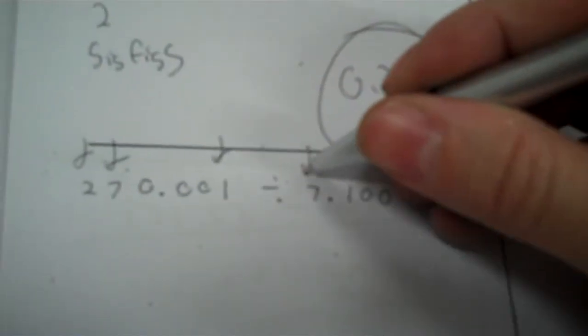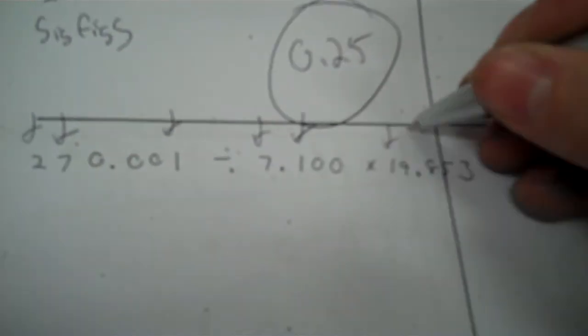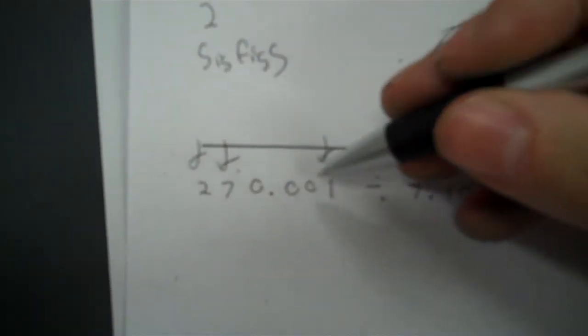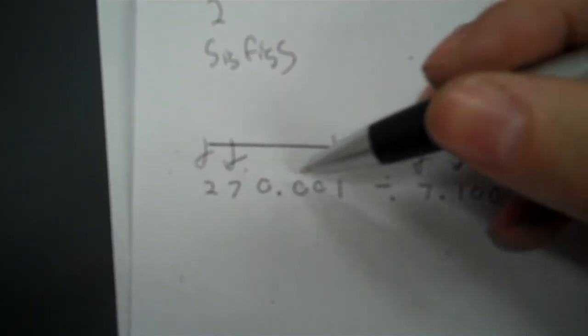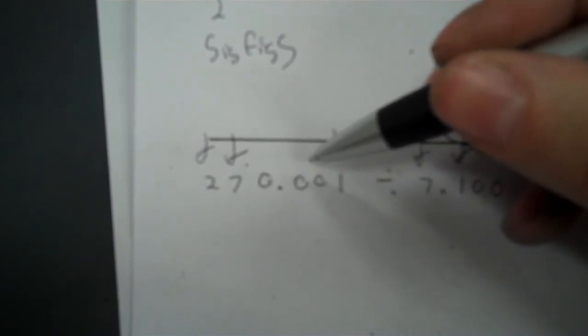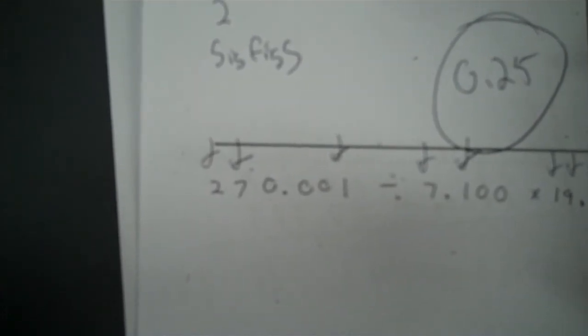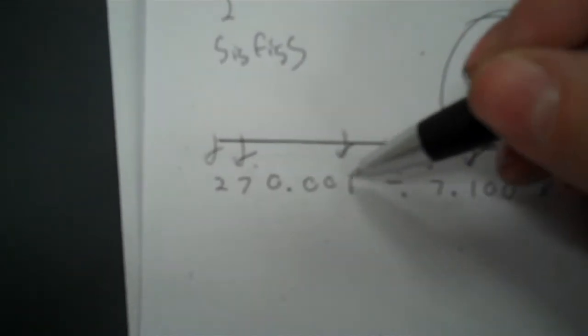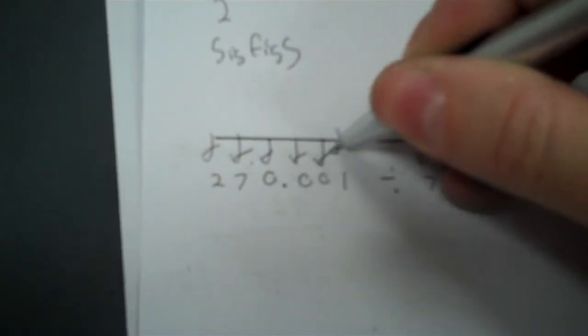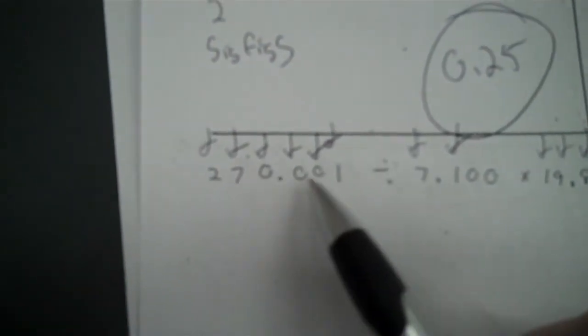One, two, three — one, two — one, two, three, four, five. Zero between non-zero digits is significant. Now these are betweeners right here — because these are zeros in between, so yeah, you count them because you mark this and this — those are betweeners. Zeros after a decimal are significant.